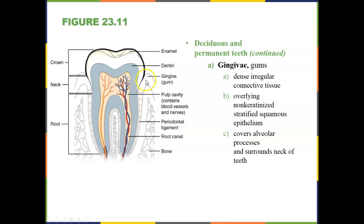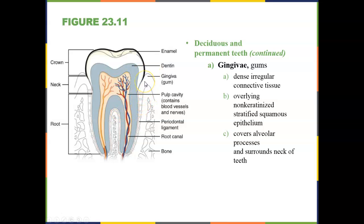Surrounding the tooth and jaw joint are the gums, known as the gingivae. This is dense irregular connective tissue composed of non-keratinized stratified squamous epithelium — it is moist and covers the alveolar process, protecting that joint. If the gums get inflamed, that is known as gingivitis. If the gums start to recede from the teeth, that leads to periodontal disease.